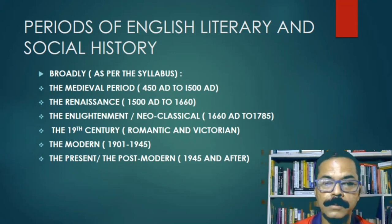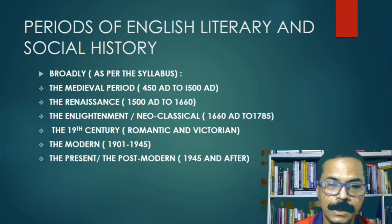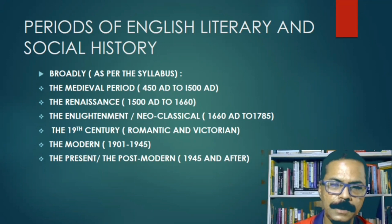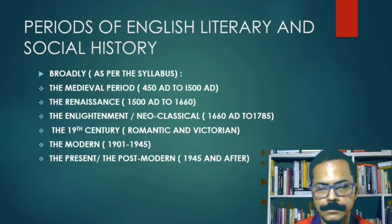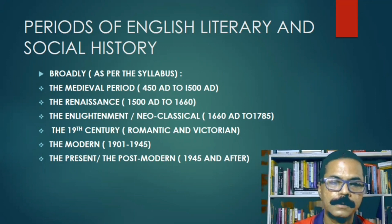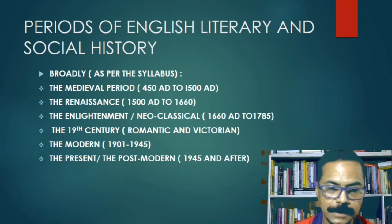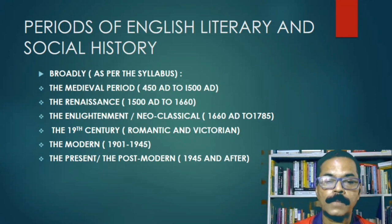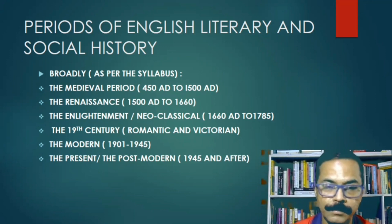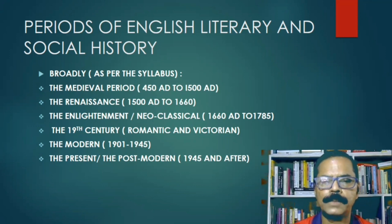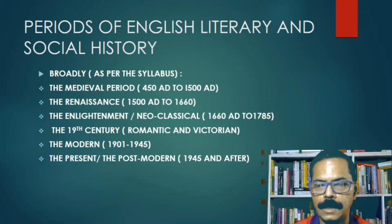1500 is the beginning of another great age — the rebirth or reawakening of human society, the Renaissance, which continues up to 1660. Then comes another very important period, not only in English society but in human history as a whole: the Enlightenment. The Enlightenment means that at the centre of human society is no longer God, religion, faith, or providence, but rather reason, logic, science, freedom, and thinking. This is the Enlightenment project, roughly from 1660 to 1785.